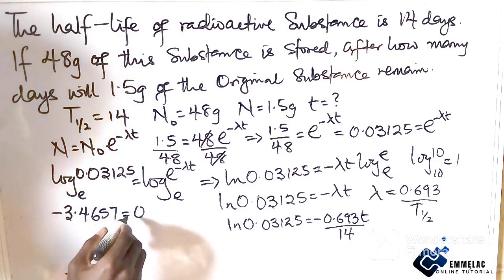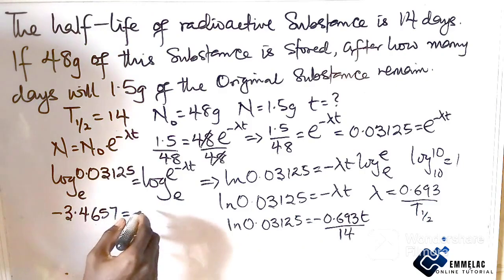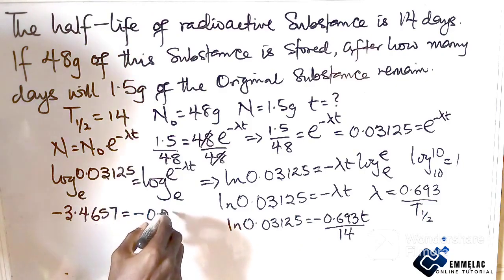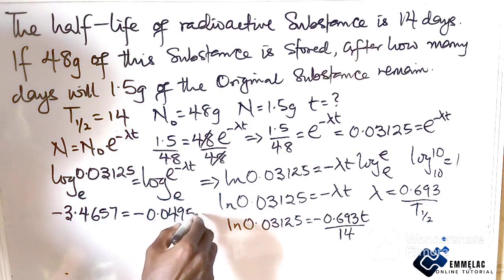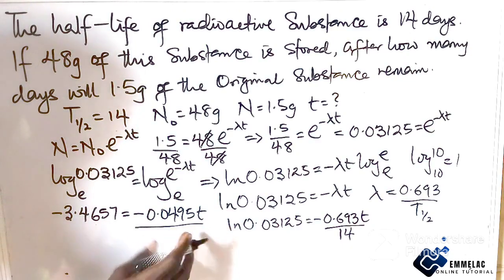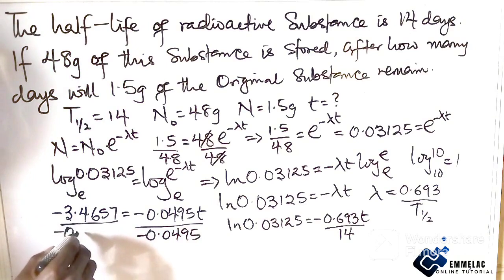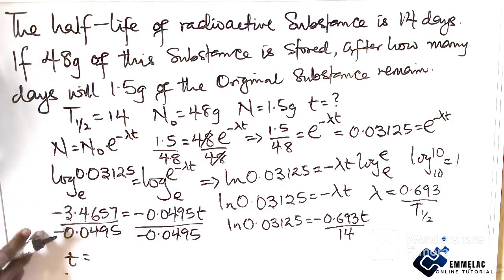Now dividing 0.693 by 14 using our calculator, we get 0.0495. So dividing both sides by the coefficient of t, which is -0.0495, our t equals approximately 70 days.